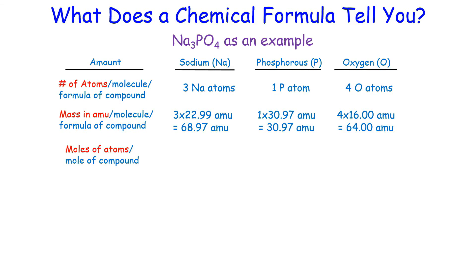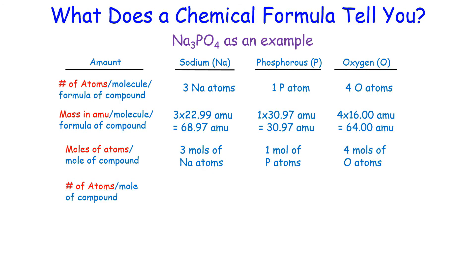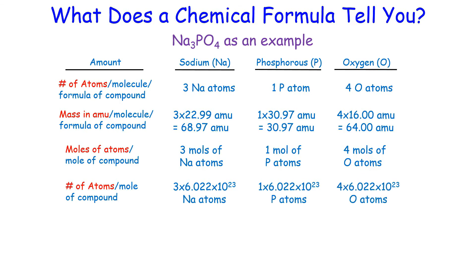For the number of moles in each mole of sodium phosphate: sodium has 3 moles, phosphorus has 1 mole, and oxygen has 4 moles — again based on the subscripts. For the number of particles in each mole of sodium phosphate: since there are 3 moles of sodium, there are 3 Avogadro's number of sodium atoms; 1 Avogadro's number of phosphorus atoms; and 4 Avogadro's number of oxygen atoms.